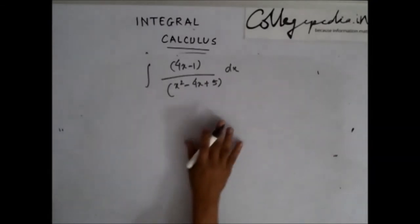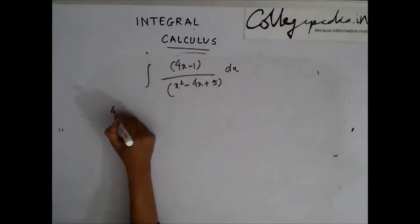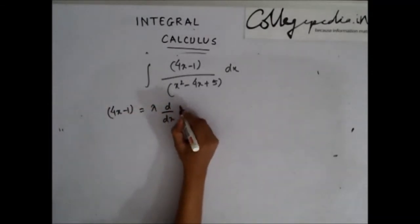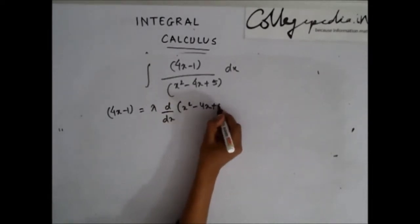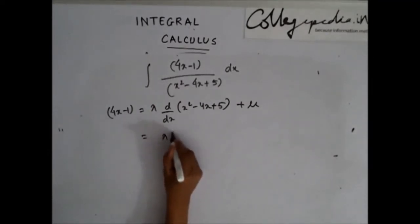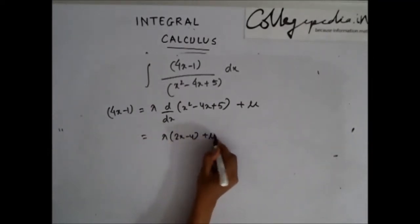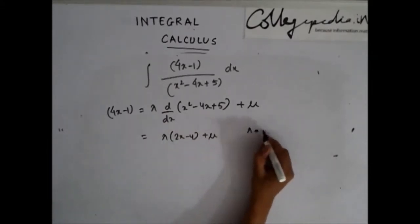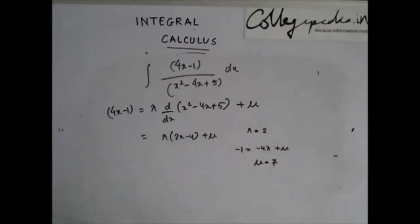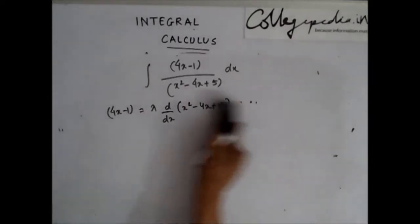So, what I had told was, try to write this as lambda times derivative of this, derivative of x square minus 4x plus 5 plus some mu constant. So this can be written as lambda into 2x minus 4 plus mu. If you compare the coefficients, you will get lambda equals to 2 and minus 1 equals to minus 4 lambda plus mu, or your mu equals to 7. So lambda is 2, mu is 7.